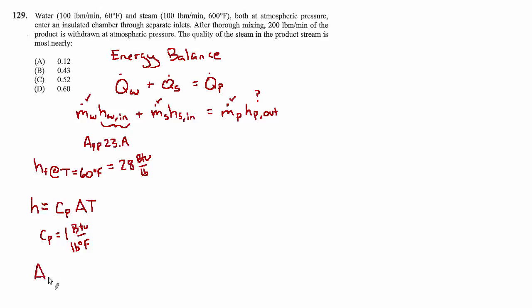So ΔT then becomes 60 minus 32, which is 28, and then 28 times 1, you end up with the same answer: 28 BTU per pound. You can think about it both ways, and that's a good way to sense check. But regardless of how you approach it, the enthalpy of liquid water at 60 degrees is about 28 BTU per pound. That's going to be our H_w,in.